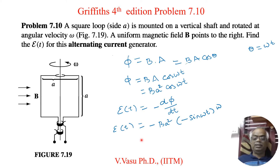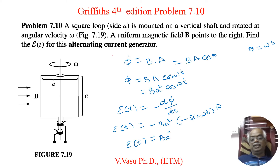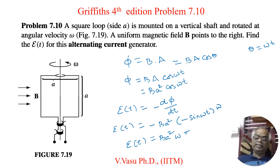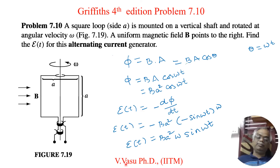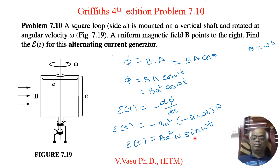The two minus signs cancel, so the induced EMF as a function of time is equal to B A squared omega multiplied by sine(omega t). This is the induced EMF. The maximum amplitude is B A squared omega, since all of those are constants, and the time-dependent part comes from sine(omega t). So this is the final answer.